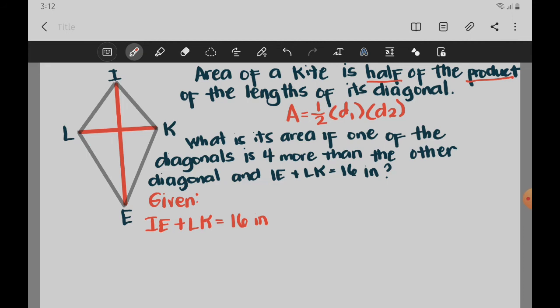So meaning IE, we need to draw the diagonal IE and then LK draw the diagonal LK. So if we add the measure of those two diagonals, it is equal to 16 inches. And then one of the diagonal is 4 more than the other. So since LK is shorter, we represent it as X. And then the longer one is 4 more than. So IE, we can represent it as X plus 4, because it's 4 longer than the shorter diagonal.